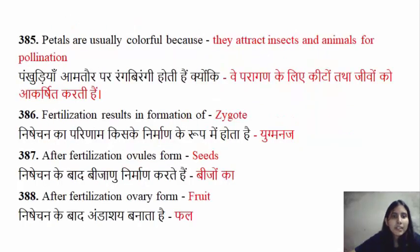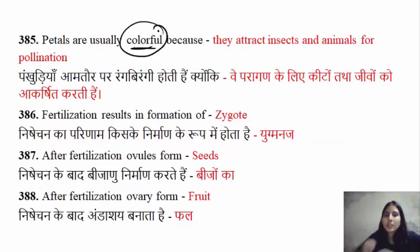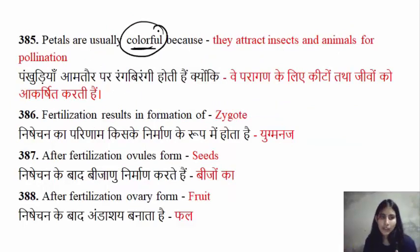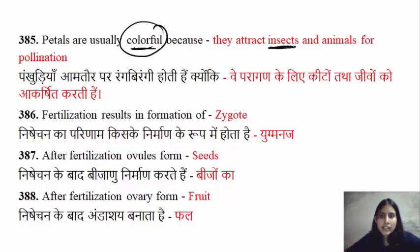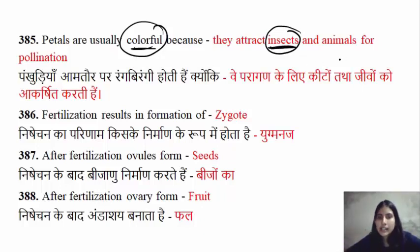The petals are colorful. The reason behind colorful petals is that flowers are usually pollinated by insects. The petals are colorful to attract insects and animals for pollination. Pollination is the process for that.